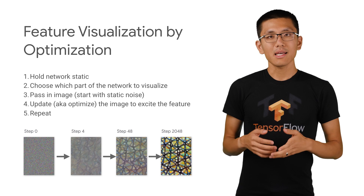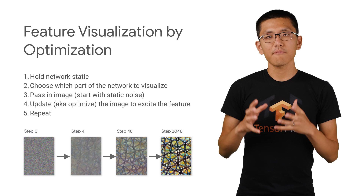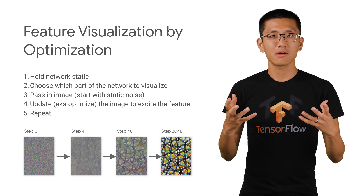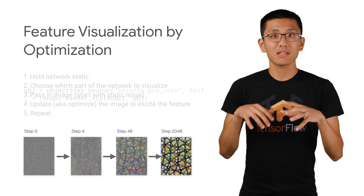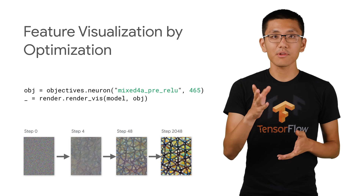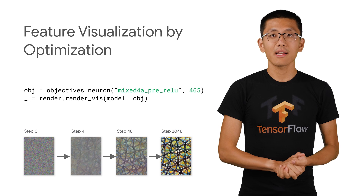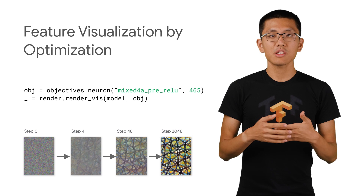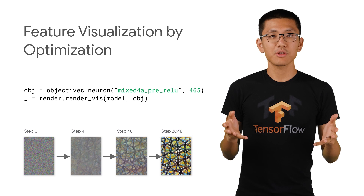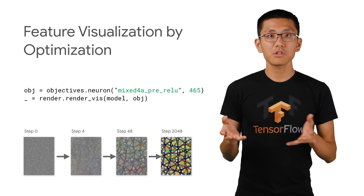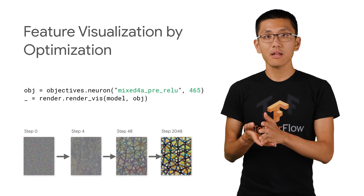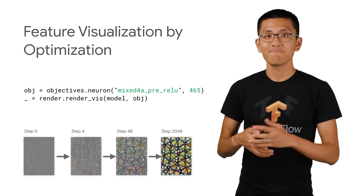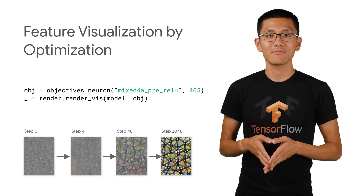The result is an image with a focused region surrounded by a more blended background. These patterns can be all over the place. And thankfully, Lucid has made this really easy to compute. There's no need to write an optimization loop yourself — you can just choose what layer, channel, and neuron you're interested in, and it'll take care of the rest.